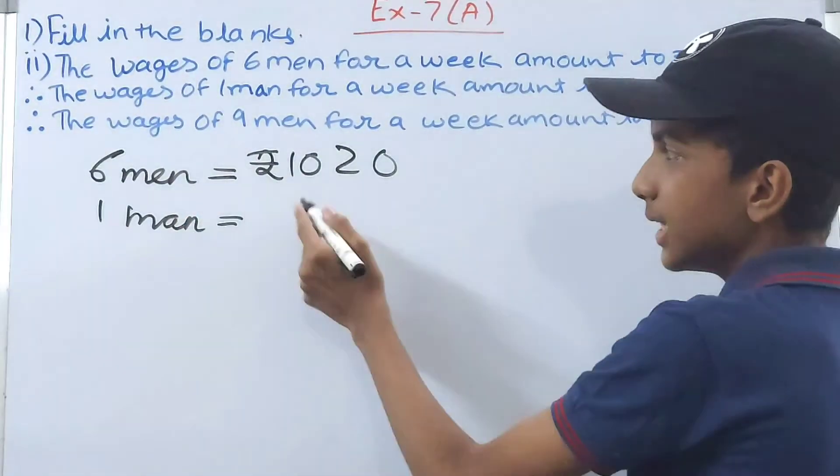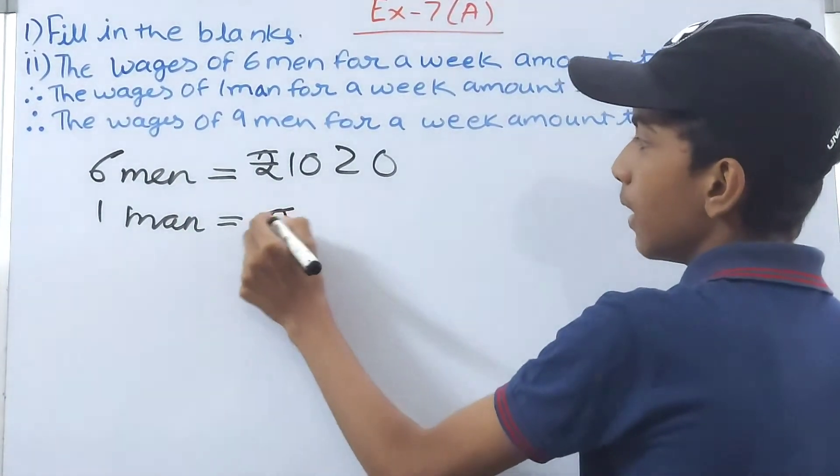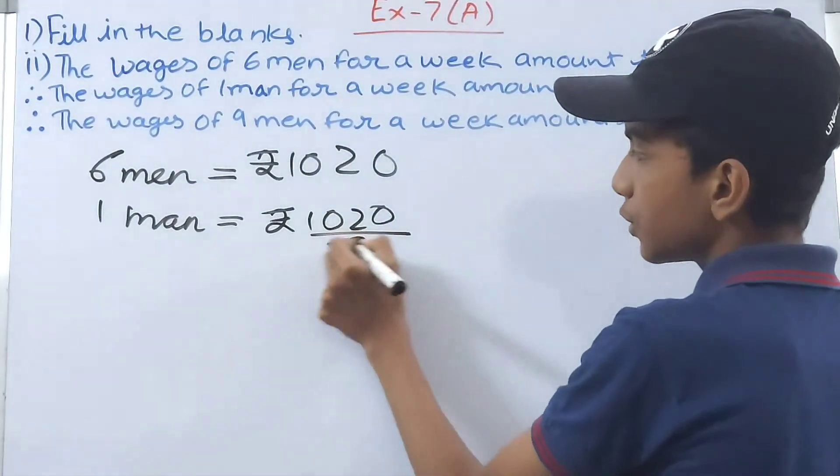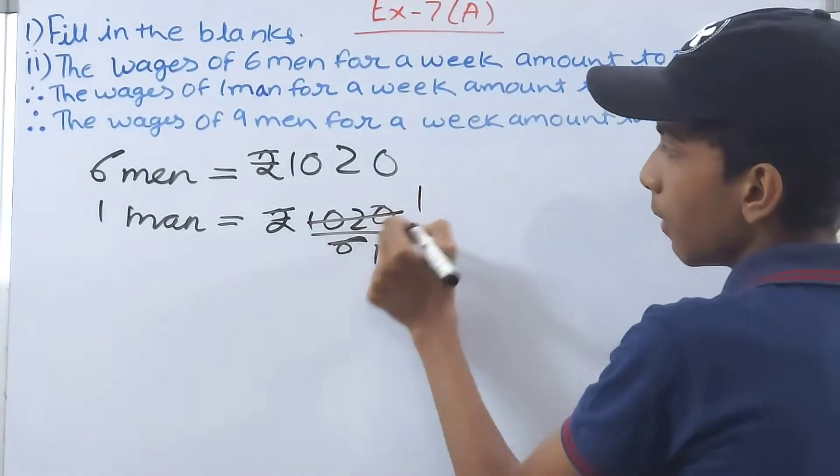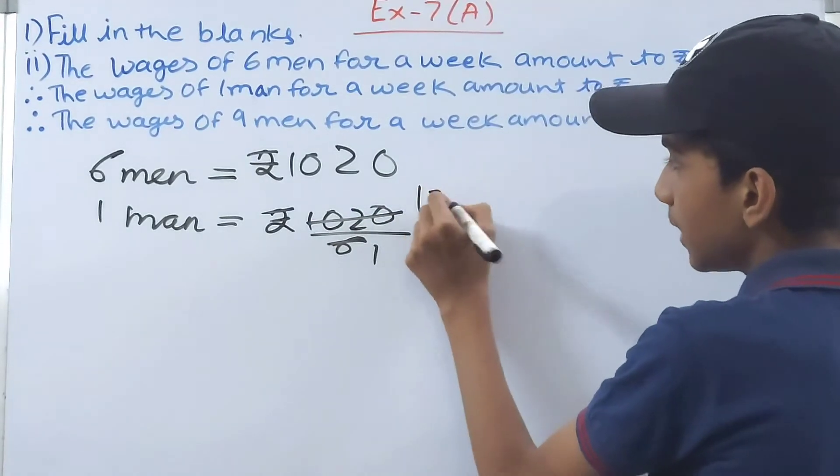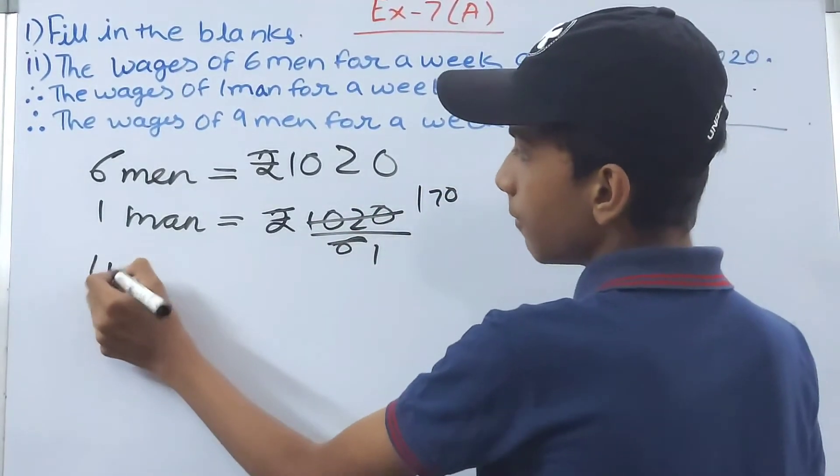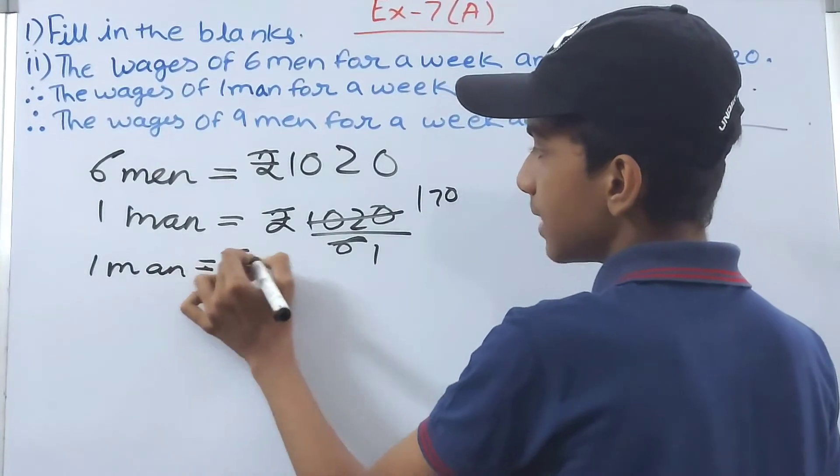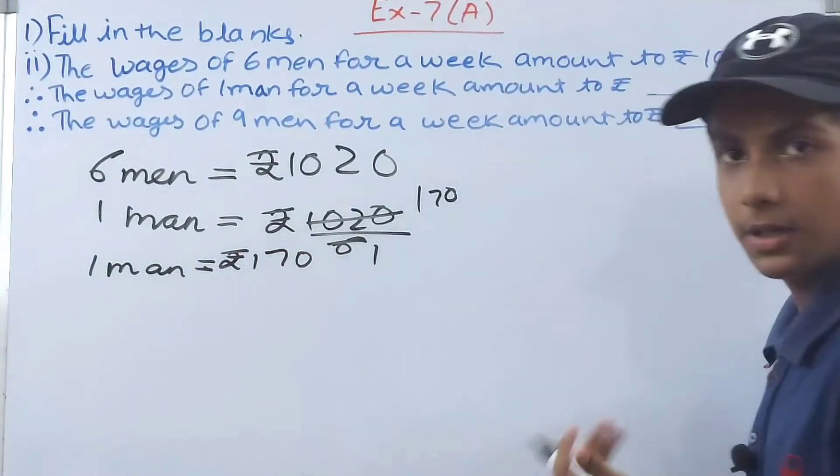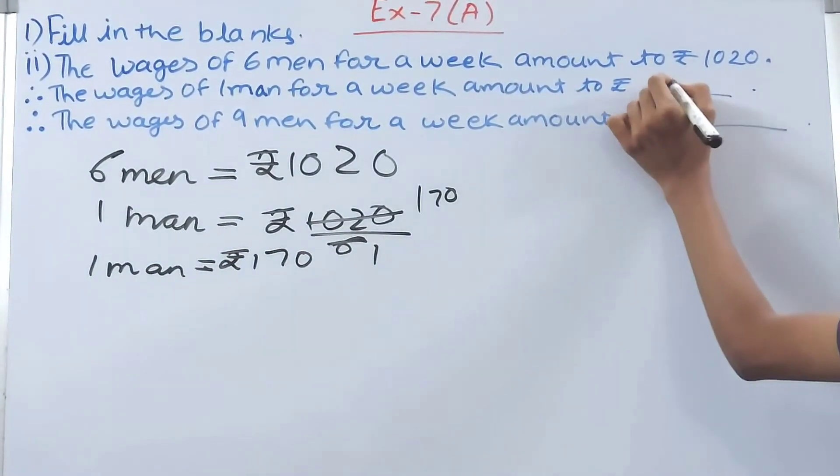Then for 9 men, how much will it be? So 9 men, how much will it be? 9 men equals to rupees 170 into 9. Simply multiply this by 9.